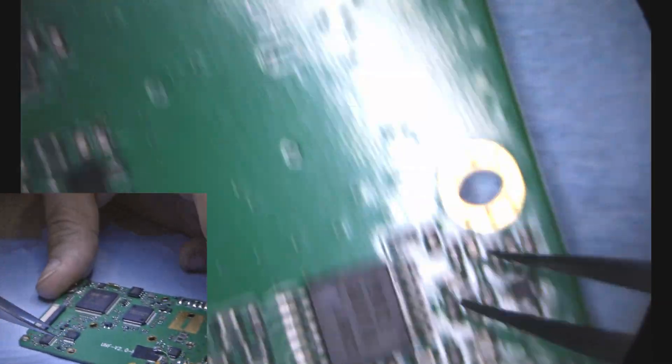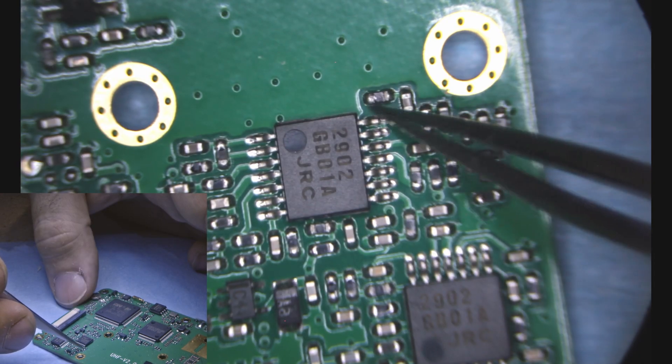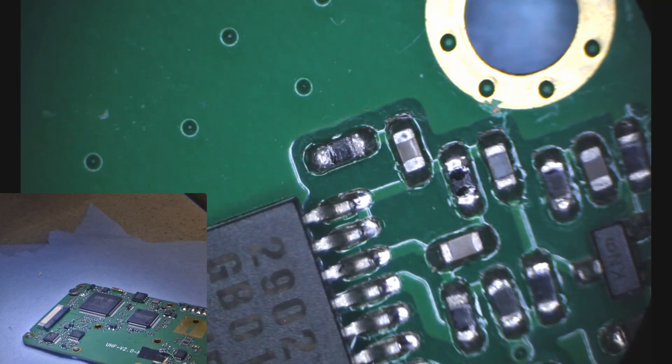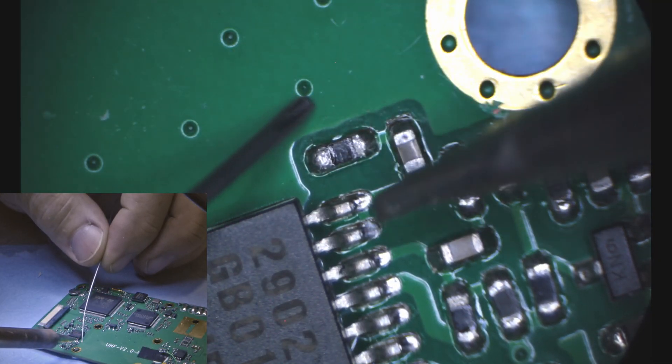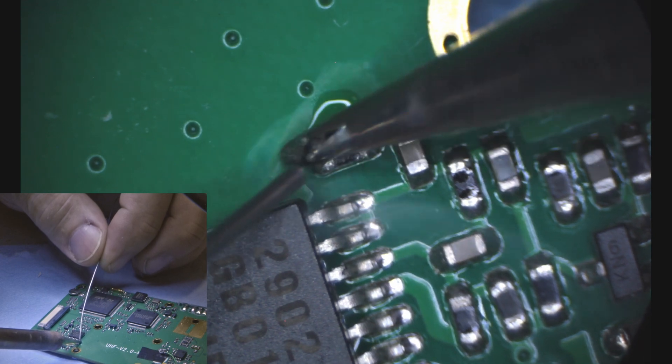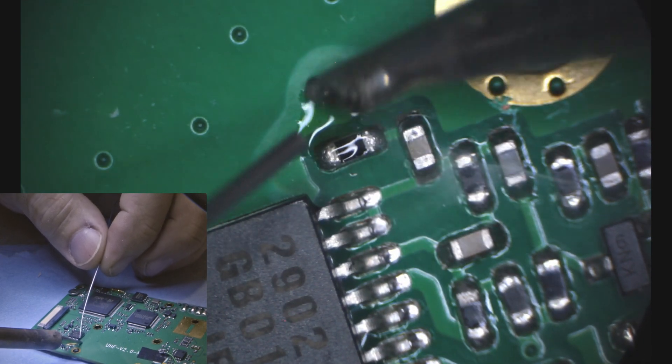Next we need to move down towards the bottom of the board and this resistor needs to be removed. Again, I'll use the solder blob method to quickly remove the tiny resistor and clean it up real quick with the desoldering iron.